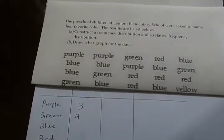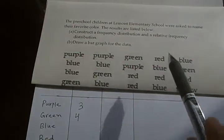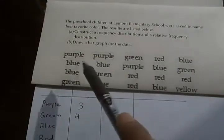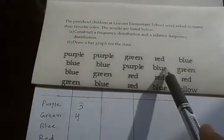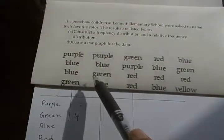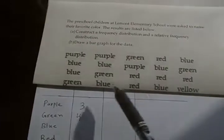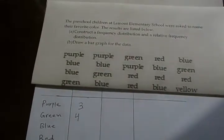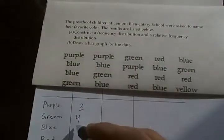Next is blue and you can see that blue would be 1, 2, 3, 4, 5, 6, and 7. Blue is appearing 7 times.